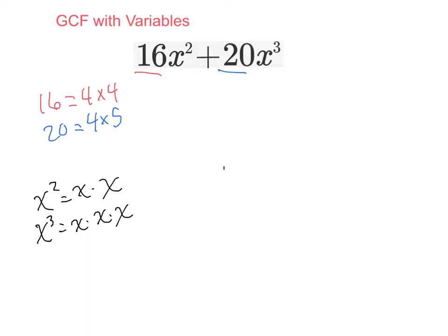Okay, so what factors do x squared and x cubed have in common? Well, x squared has two factors of x, and x cubed has three factors of x. So in common, they both have two factors of x, or x times x equals x squared.